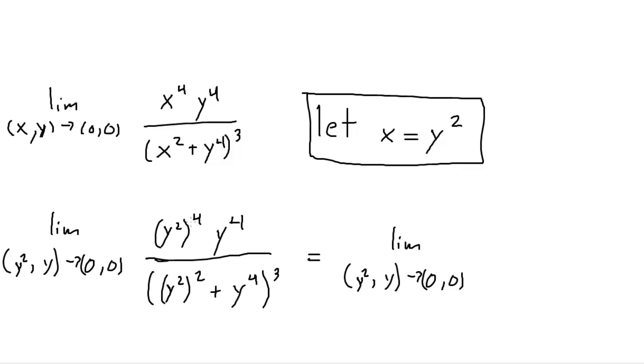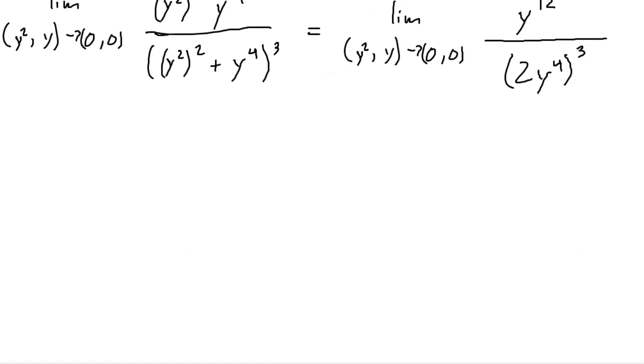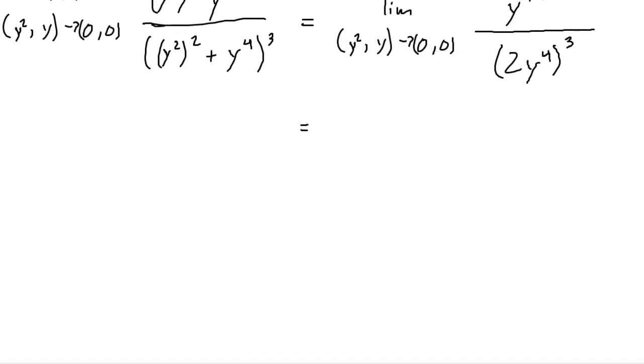And let's see what happens. y squared to the fourth, that's to the eighth. Add that to four. So, you're going to get y to the twelfth over. Then this is y to the fourth and y to the fourth. So, that's two y to the fourth, y to the fourth. All of this to the third power.